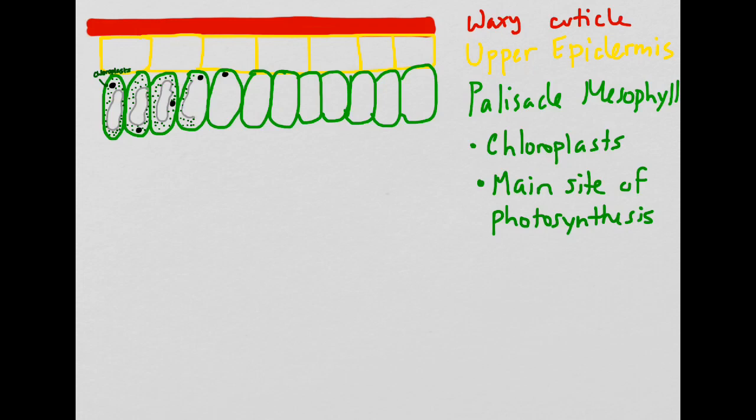This makes the third layer, the palisade mesophyll, the main site of photosynthesis in a leaf. Photons of light will shine down through the waxy cuticle and the upper epidermis, which are both mostly clear, and allow photosynthesis to take place in the chloroplasts of the palisade mesophyll.